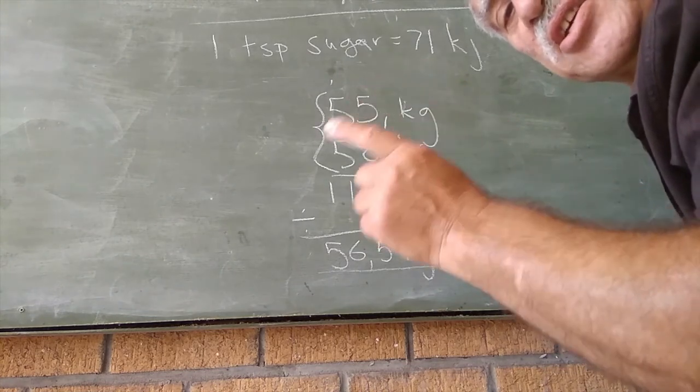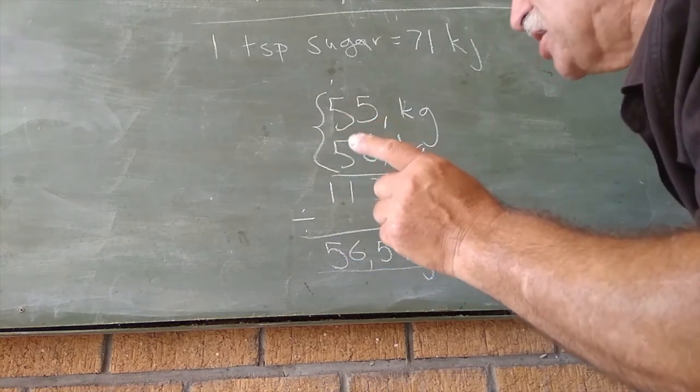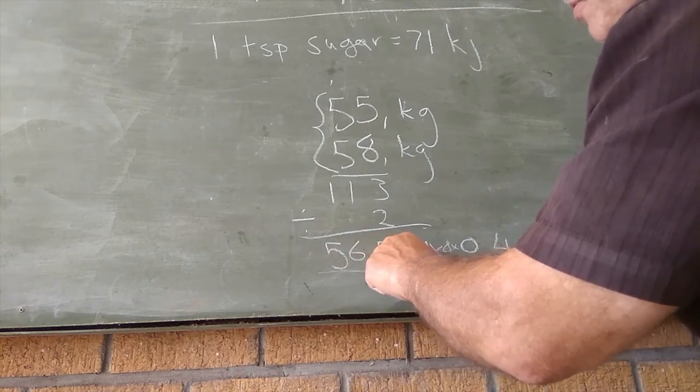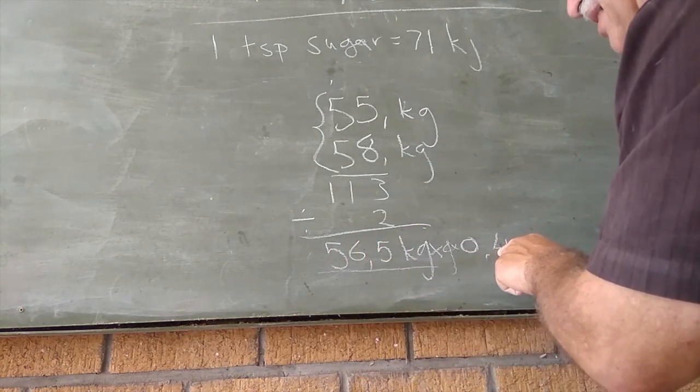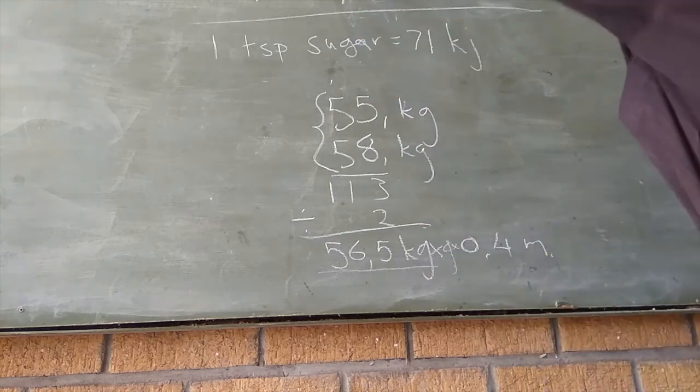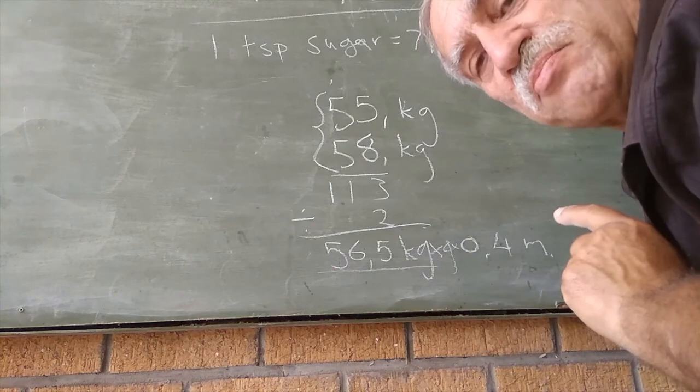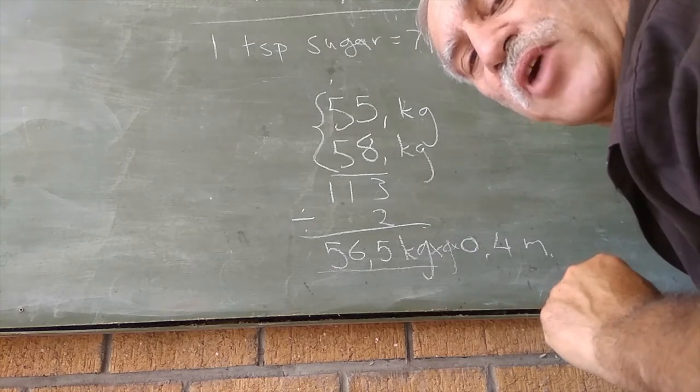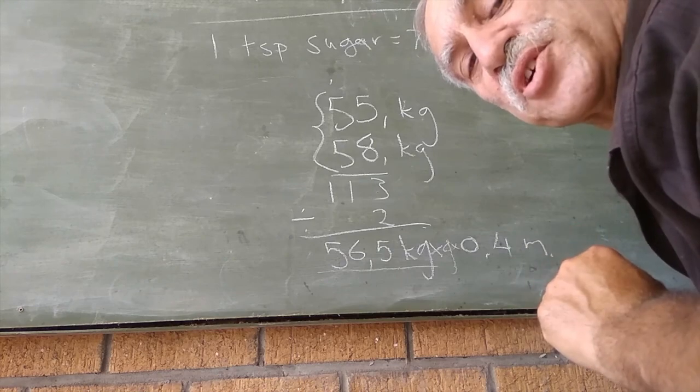So, here's your data again. The average mass, my average mass is 56.5. The distance I do a push-up is 0.4 meters. G stays the same. By the same method we used above, work out how many press-ups I'm going to have to do to burn off one level teaspoon of five grams of sugar.